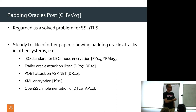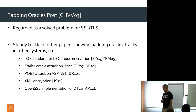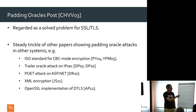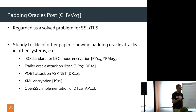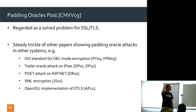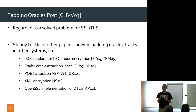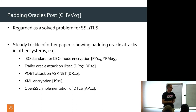Duong and Rizzo — the guys who came up with CRIME and BEAST — did a warm-up with the POET attack on ASP.NET in 2010. ASP.NET used some unusual padding with no integrity protection, enabling a padding oracle attack. That was how they sharpened their tools before BEAST and CRIME. Then in 2012, Nadem Alfardan and I looked at OpenSSL's implementation of DTLS — not TLS, but DTLS — almost 10 years after Vaudenay's work.